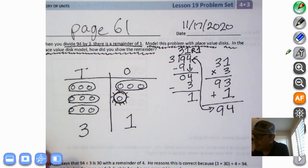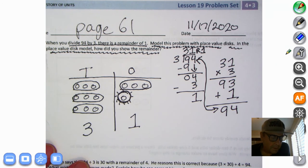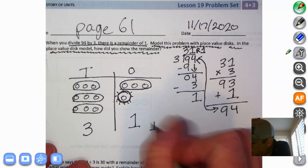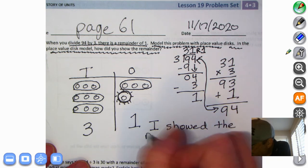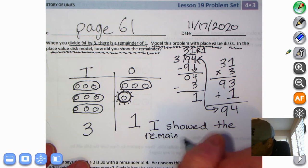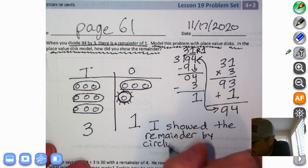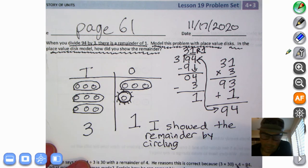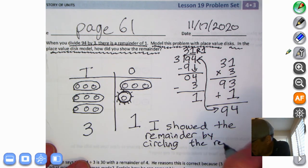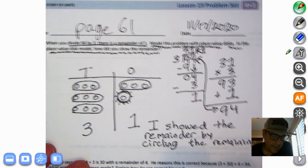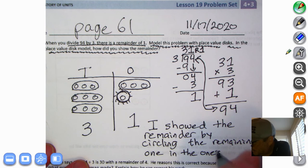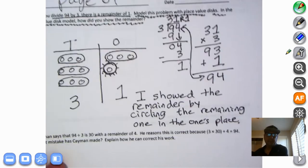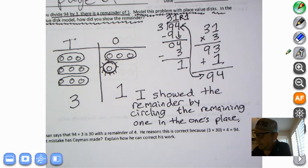It's asking us in the place value disks model how did you show the remainder. We could write down here: I showed the remainder by circling the remaining one in the one's place. So go ahead and pause if you need to. That's how we showed it. Maybe I should have put a box around there, that would have been a little different.